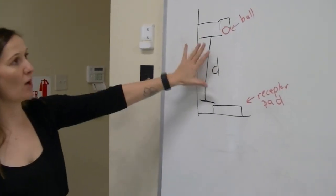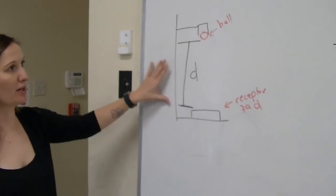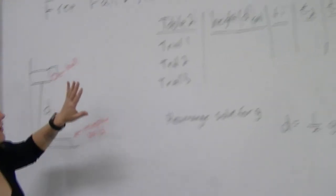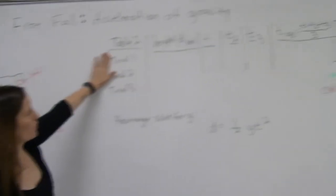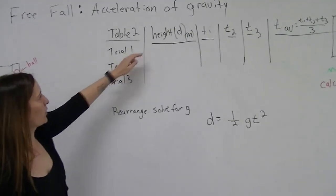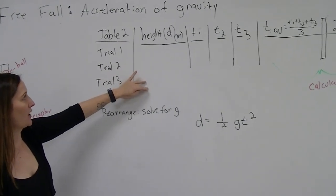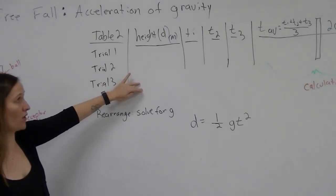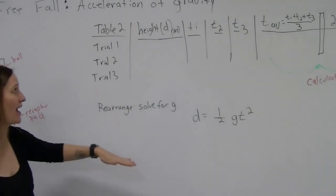Let's look over at the table and see what data we're collecting and how we're going to manipulate that data. This is a table similar to what you'll see on your sheet. We're doing three different trials, and we're going to do three different heights. That's the distance that the ball is falling, from the moment that it's released to the time it hits that pad.